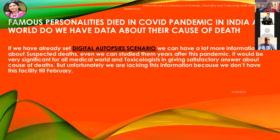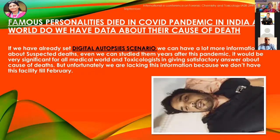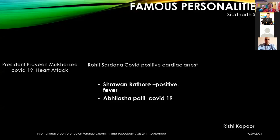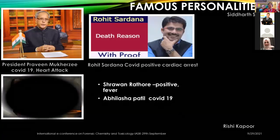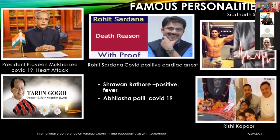When I search for deaths of famous personalities who died in the COVID pandemic in India and the world, I would like to ask: do we have data about their cause of death? If we already had a digital autopsy scenario, we could have much more information about suspected deaths, and could study them years after this pandemic — very significant for the medical world and toxicologists. Unfortunately, we lack this information because we didn't have this facility until March 2021. Famous personalities include our first citizen President Pranab Mukherjee, who died due to COVID-19 and heart attack; Rohit Sardana; Tarun Gogoi, who died due to COVID-19 complications; Sidharth Shukla, who died due to heart attack; and Rishi Kapoor, among many more.